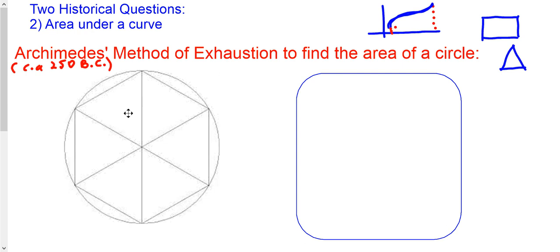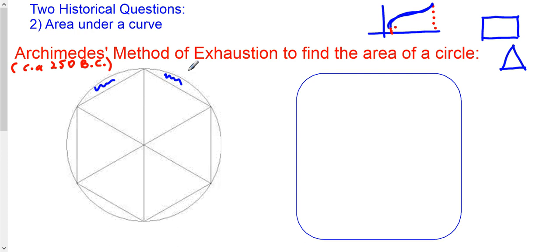And he found the area of each of the triangles and added up those areas to get an approximation. But you might say, what about all these areas that are not covered? For example, this little area here is not going to be counted. So what he did was he increased the number of sides gradually.